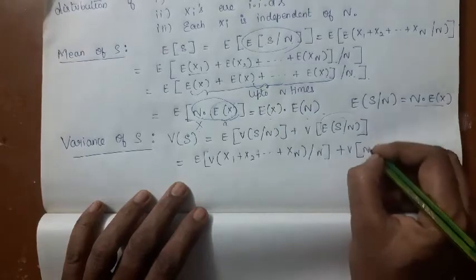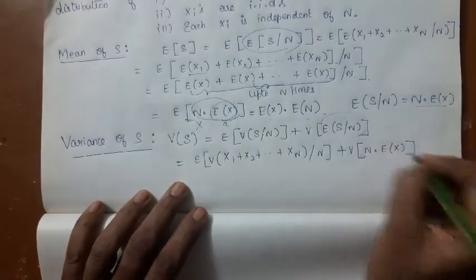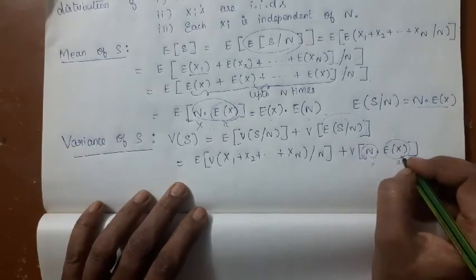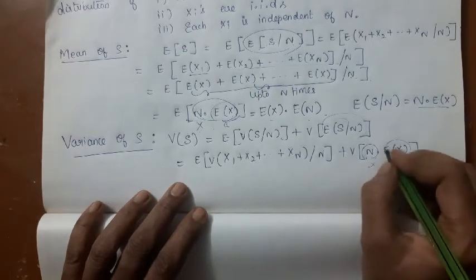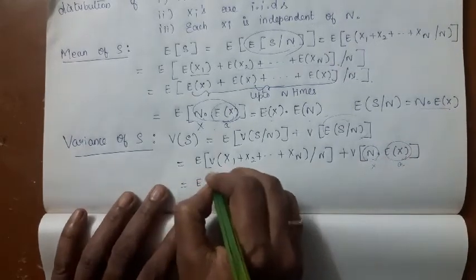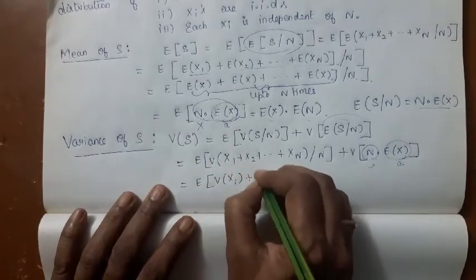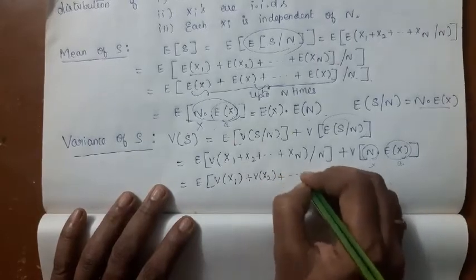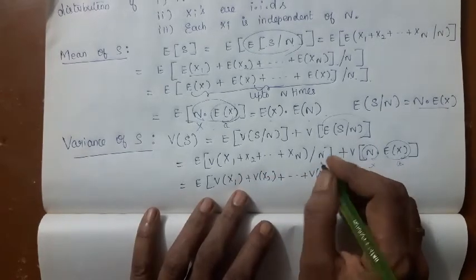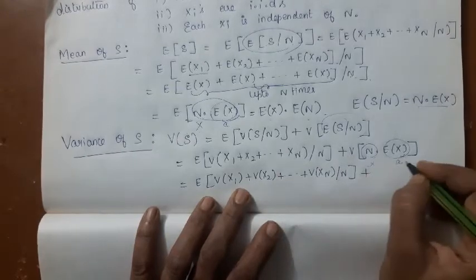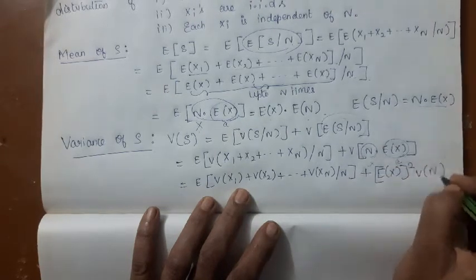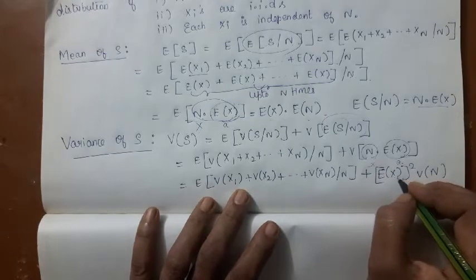We have proved that E[S|N] = N · E[X]. Since Xi's are IIDs, Var(X1 + X2 + ... + XN | N) = Var(X1) + Var(X2) + ... + Var(XN) — there is no covariance term because the variables are independent. For the second term, Var(N · E[X]): since E[X] is a constant, Var(a·X) = a² · Var(X), so it becomes E[X]² · Var(N).